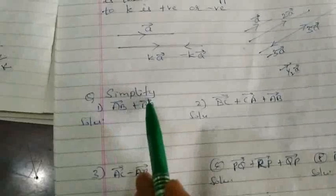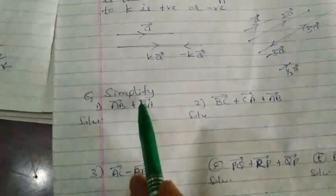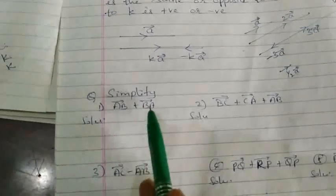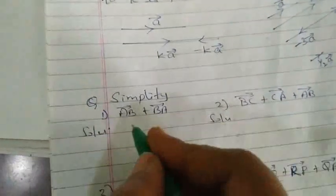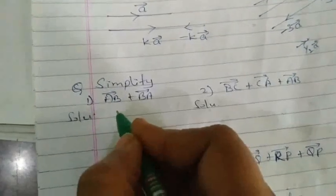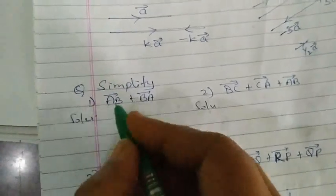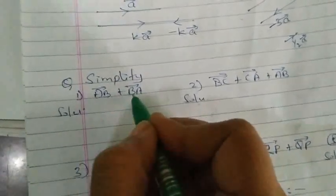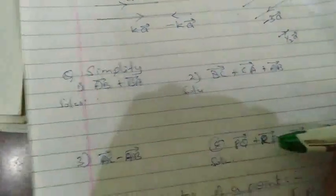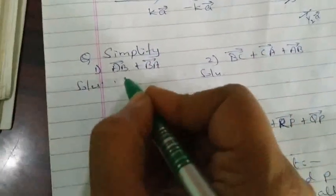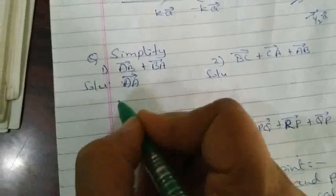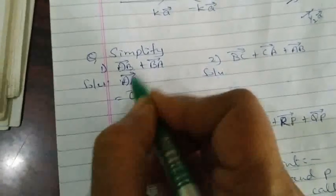Simple questions are given here. Simplify based on triangular law of vector addition: AB vector plus BA vector. Solution begins — AB vector plus BA vector. Here BB remains the same, so the result is going to be AA vector, which is nothing but the null vector.